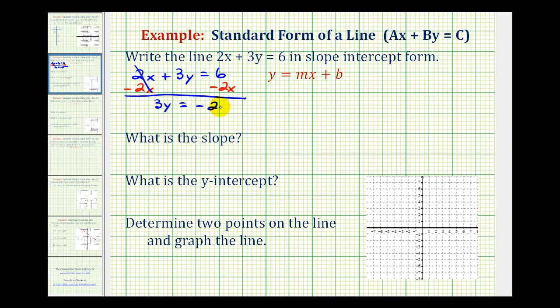So we'll have negative 2x plus 6 and now to solve for y, we'll divide everything by 3. So the equation in slope-intercept form would be y equals negative 2/3 x plus 6 divided by 3, which is 2.